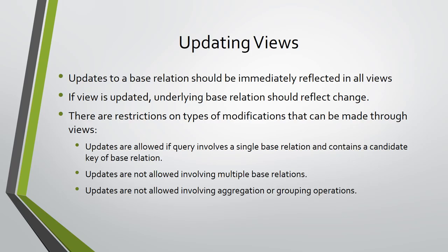However, there is a major problem with views. Although updates to the base relation are automatically reflected in all views that reference that base relation, the reverse is not easy and sometimes is not even possible. Views can be based on quite complex queries, and there is no easy way to define how changes in views can be reflected back to their base relations. There are restrictions that define when such an update is possible — for example, if a view is based on a query involving a single relation and contains a candidate key of that relation, it is possible to find the corresponding tuple in the base relation and propagate the changes. In other cases, updating the base relations is not possible, and therefore updating the view is not allowed.